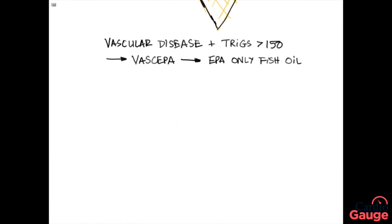So the upshot of all this is that for people with vascular disease and triglycerides that are elevated more than 150, Vascepa is probably a good idea. And if the person can't afford that, then EPA-only fish oil seems like a reasonable choice.